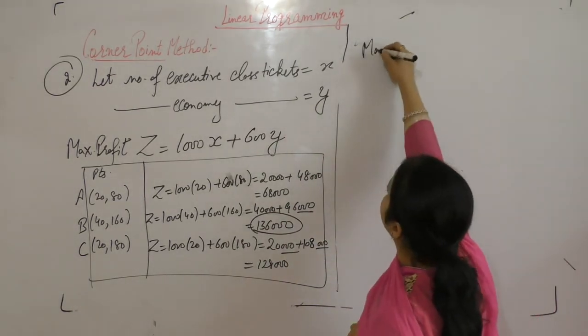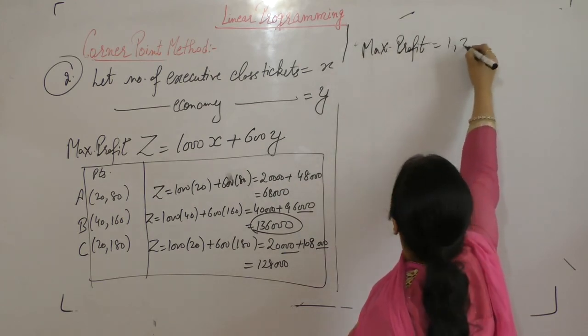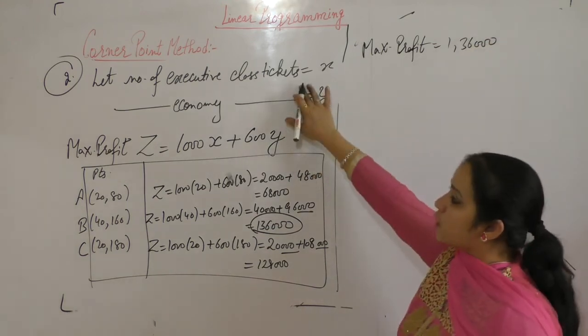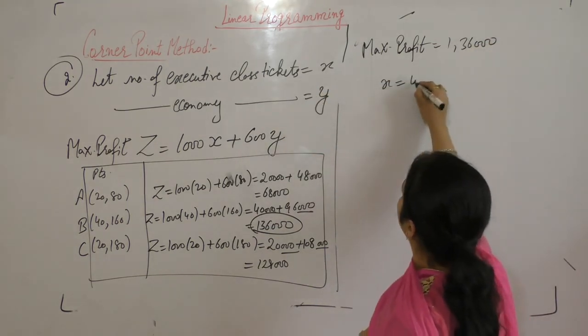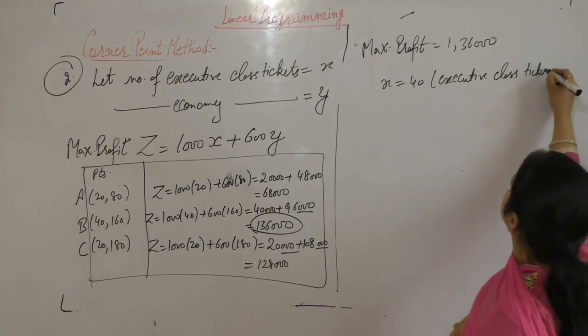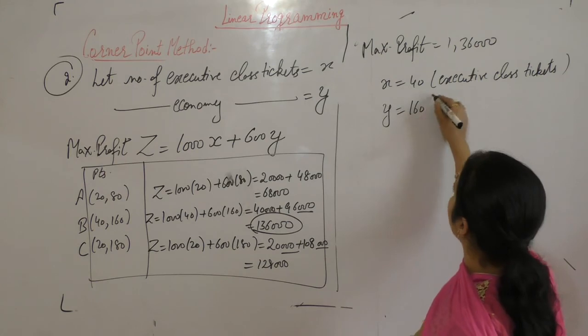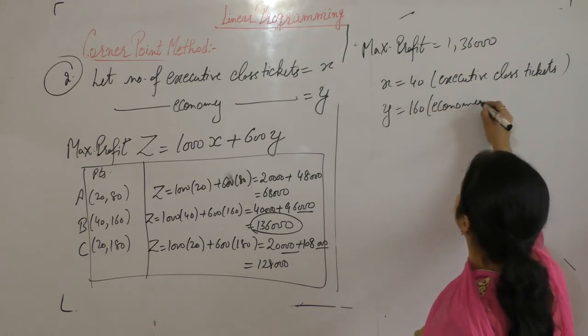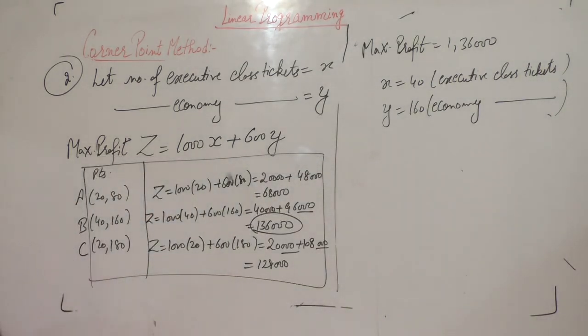So maximum profit is 136,000 when they sell executive class tickets 40 and economy class tickets 160. If 40 executive class tickets are sold and 160 economy class tickets, then the airline will get maximum profit.